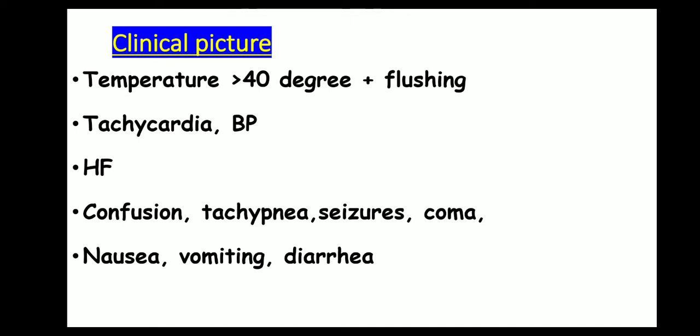What's the clinical picture? How will the patient manifest? First of all, the basal metabolic rate will be too high. The patient will be having very high temperature, around more than 40 degrees Celsius, with flushing. The tachycardia will be too high, and the patient becomes very hypertensive with a very wide pulse pressure.